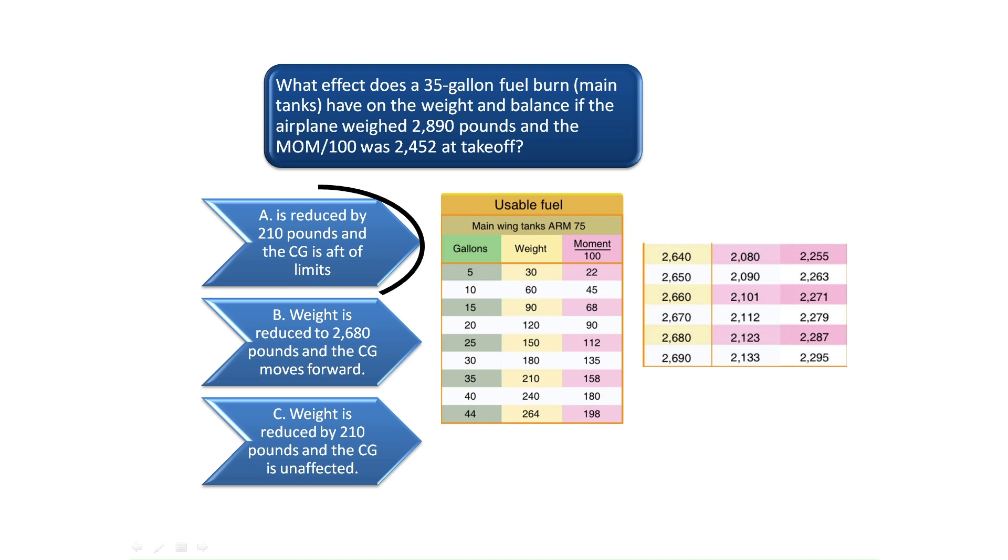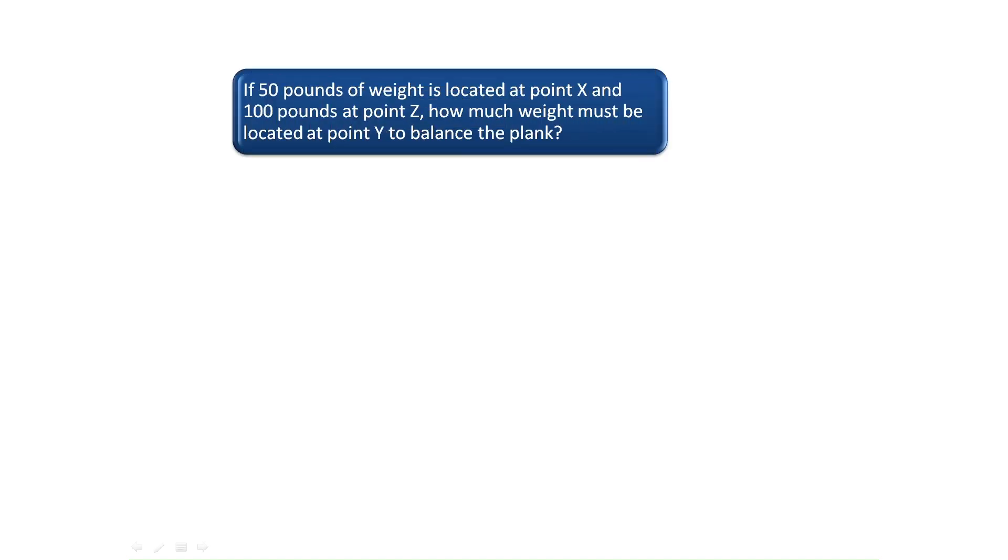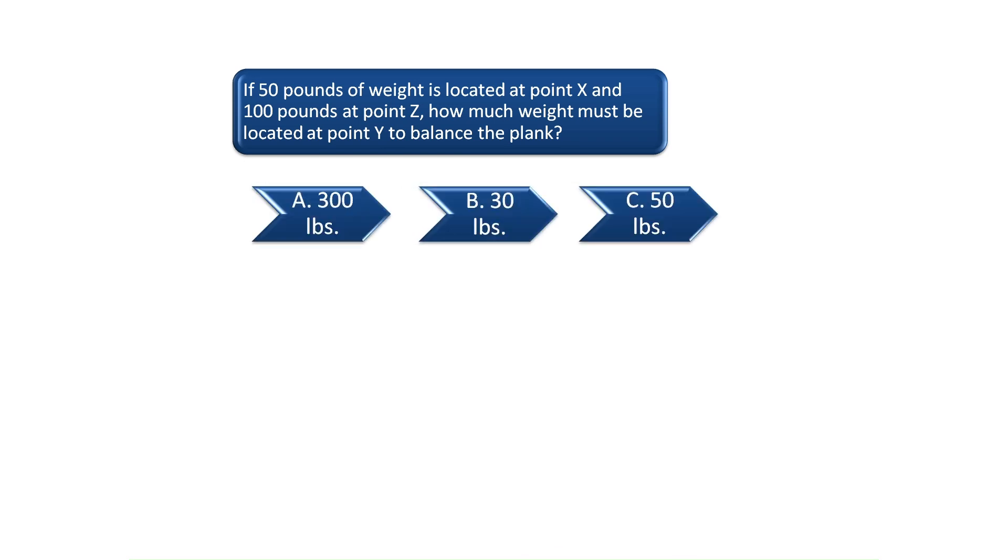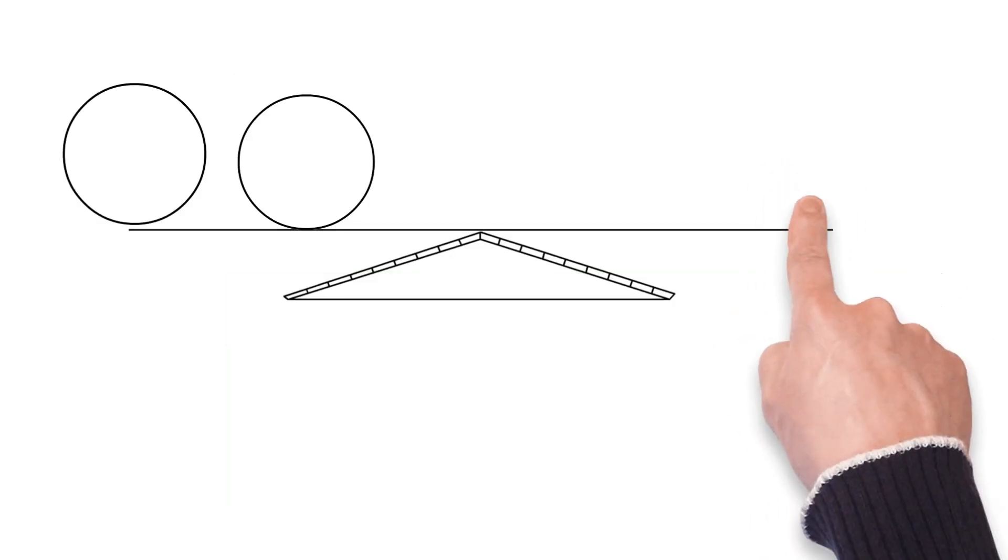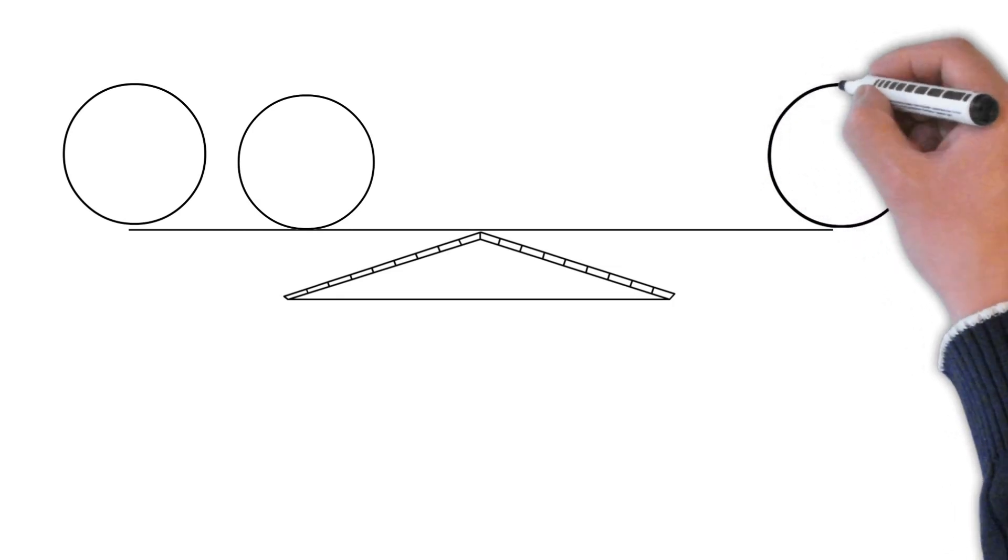The last question asks: If 50 pounds of weight is located at point X and 100 pounds at point Z, how much weight must be located at point Y to balance the plank? To solve this problem, we need to find the moment for points X and Z on the plank.